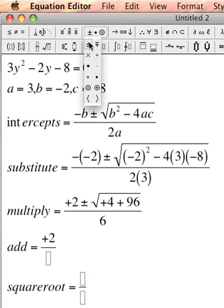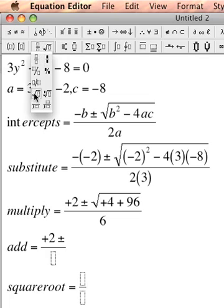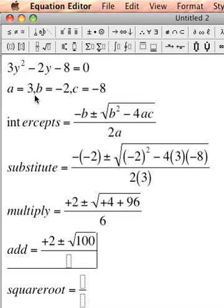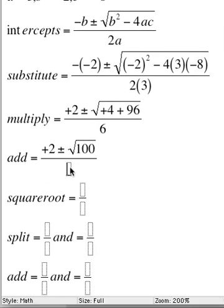Now inside of the square root, I have 4 plus 96, that's 100, divided by 6.